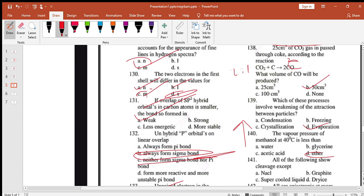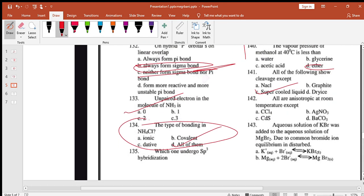All of the following show cleavage except super amorphous solid. All are anisotropic at room temperature except CCl4. Aqueous solution of KBr was added to aqueous solution of MgBr2. Due to common bromide in equilibrium undisturbed. Magnesium and bromide are made up because potassium is made up.